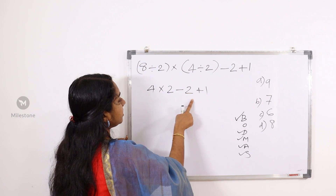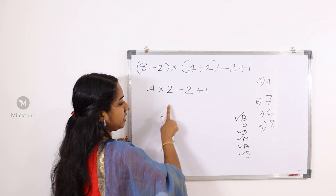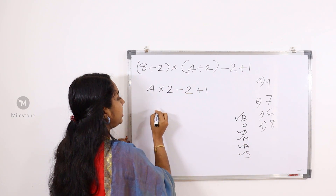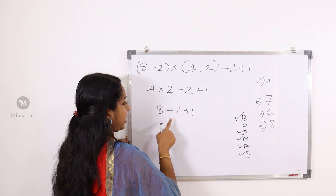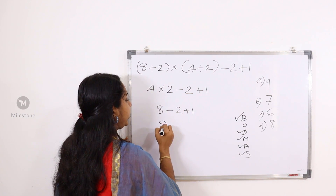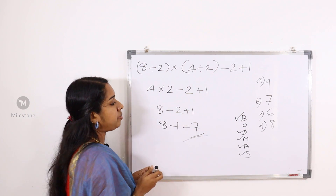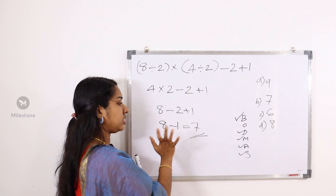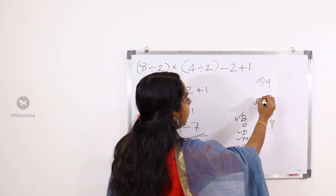What we need is minus 2 plus 1. We multiply it, then wait for 4 by 2. Then you have to answer the question: how many steps are there? The next steps change. Option B is the answer.